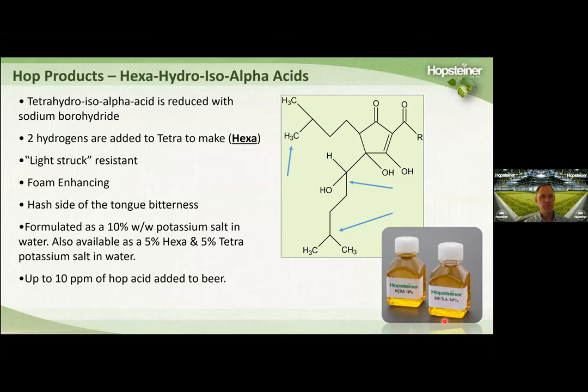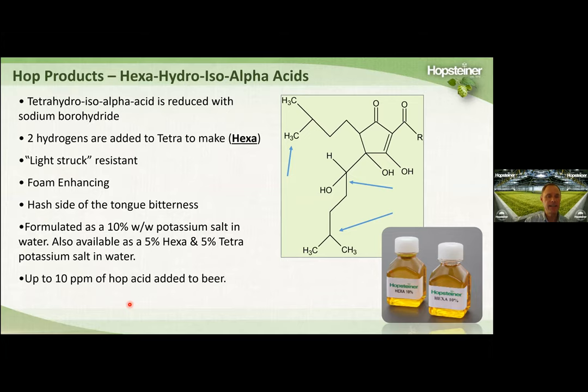We also make a hexa product — hexahydro iso-alpha acid — where we take the Tetra product and treat it with sodium borohydride, adding two more hydrogens. It's light resistant and foam enhancing, with a kind of harsh side-of-the-tongue bitterness. It's formulated as a 10% solution in water. We also have a 5% hexa and 5% Tetra product with a nice mixed bitterness profile. This product is typically added up to 10 ppm in beer, though for just foam enhancement you can use as little as four to five ppm.